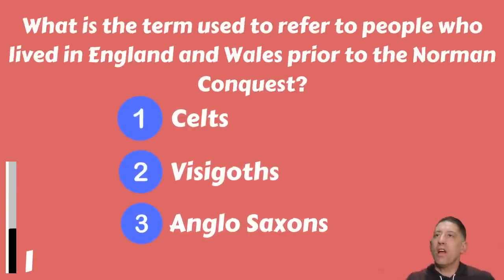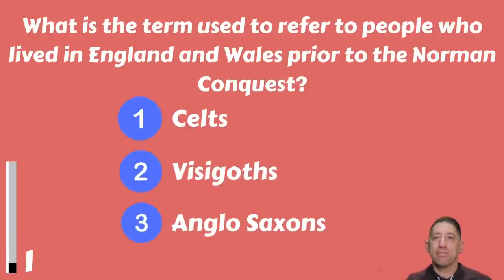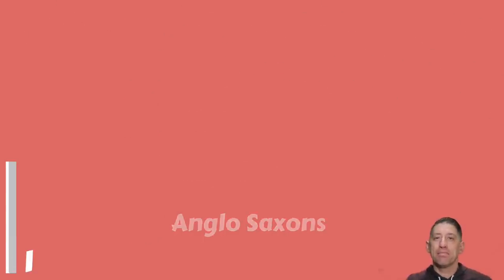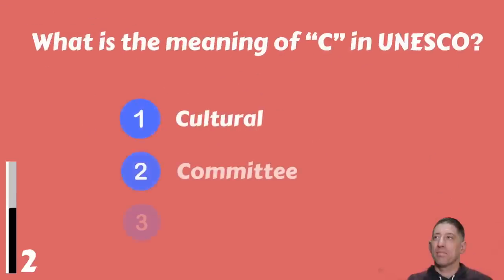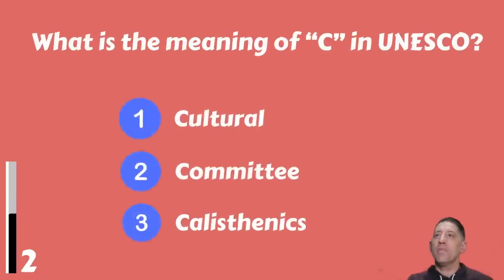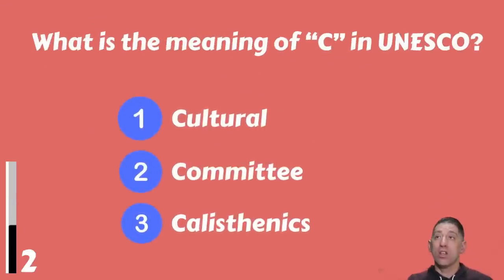The options are: the Celts, the Visigoths, or the Anglo-Saxons? The answer is the Anglo-Saxons. Next: what is the meaning of the 'C' in UNESCO — Cultural Committee, or Calisthenics?